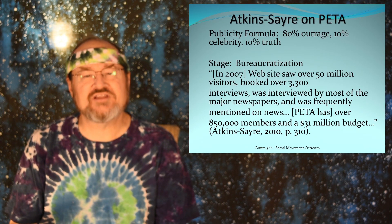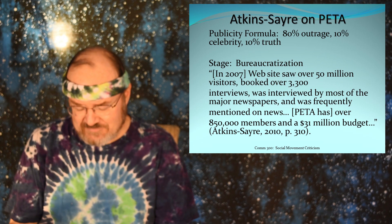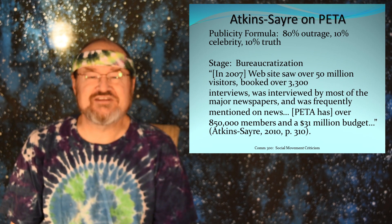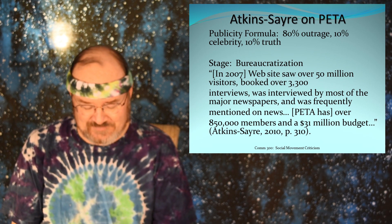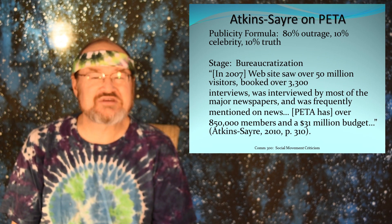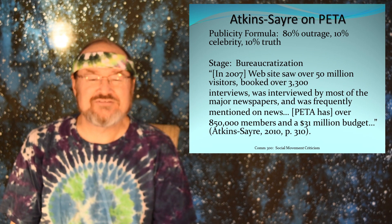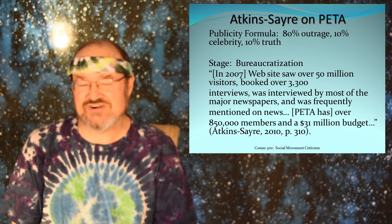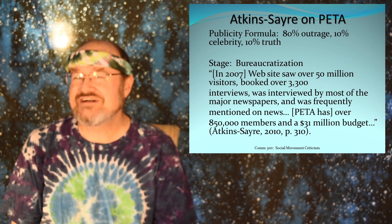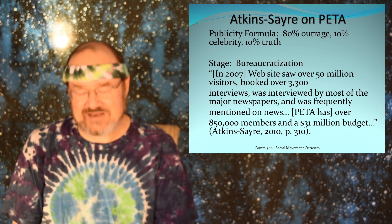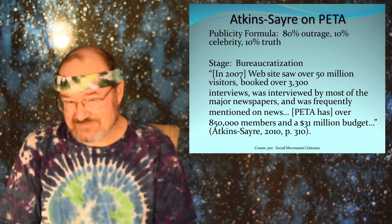The Atkins-Sayers article on PETA — what's their formula for publicity, and what stage is the animal rights movement in? Their publicity formula is 80% outrage, 10% celebrity, and 10% truth. If you've gone to the PETA website, you know that celebrity is true and outrage is true. It's a little less clear how much of it is actually truth, but 80% outrage and 10% celebrity is probably not far off.